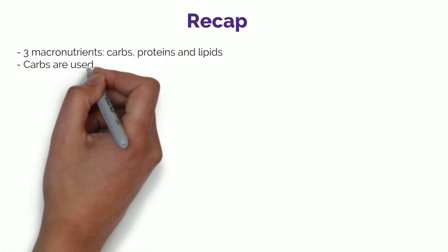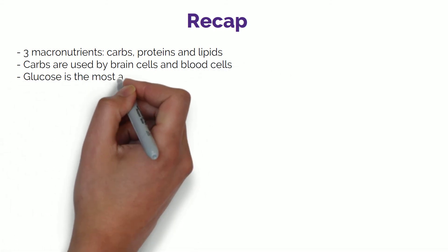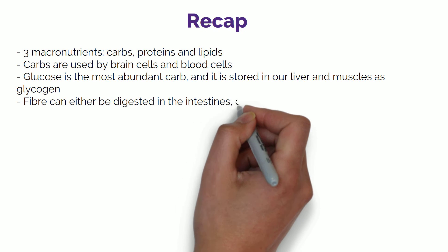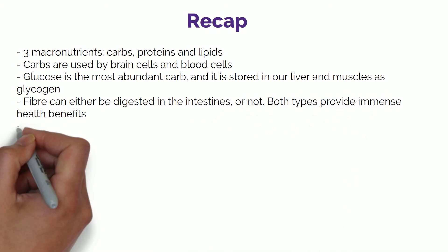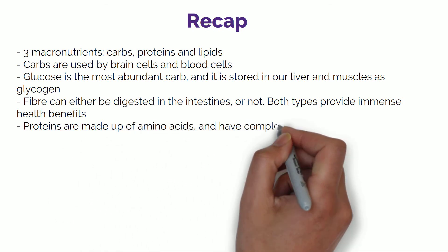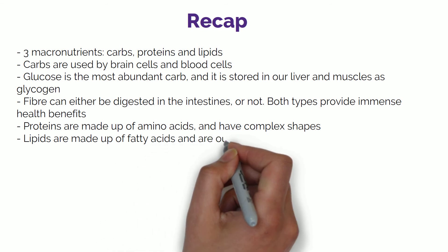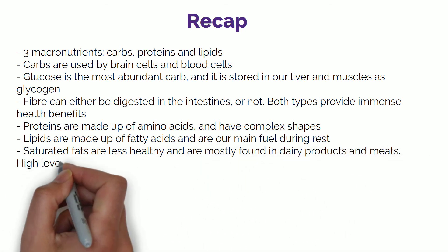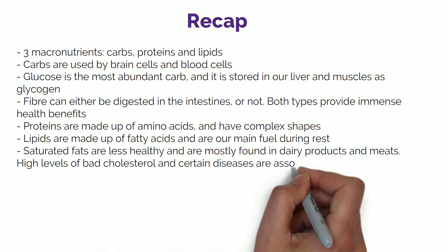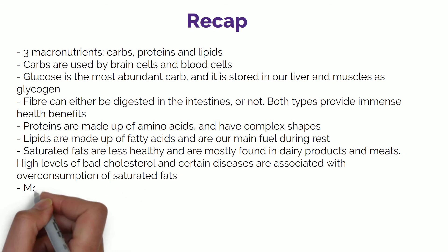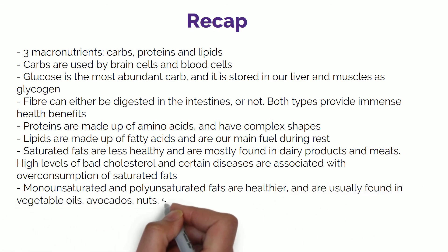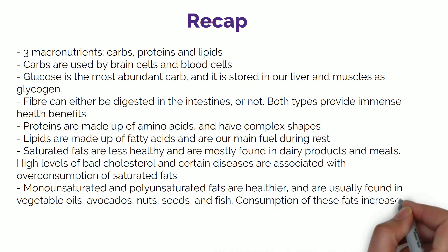Here's a little recap of today's lesson. There are three macronutrients: carbs, proteins and lipids. Carbs are used by brain cells and blood cells, making it an extremely important macronutrient. Glucose is the most abundant carb and it is stored in our liver and muscles as glycogen. Fibre can either be digested in the intestines or not, and both types provide immense health benefits. Proteins are made up of amino acids and have complex shapes which allow them to perform specific functions in our bodies. Lipids, also called fats, are made up of fatty acids and are our main fuel during rest. Saturated fats are less healthy and are mostly found in dairy products and meats, and high levels of bad cholesterol and certain diseases are associated with their overconsumption. Monounsaturated and polyunsaturated fats are healthier and are usually found in vegetable oils, avocados, nuts, seeds and fish, and their consumption increases the levels of good cholesterol.